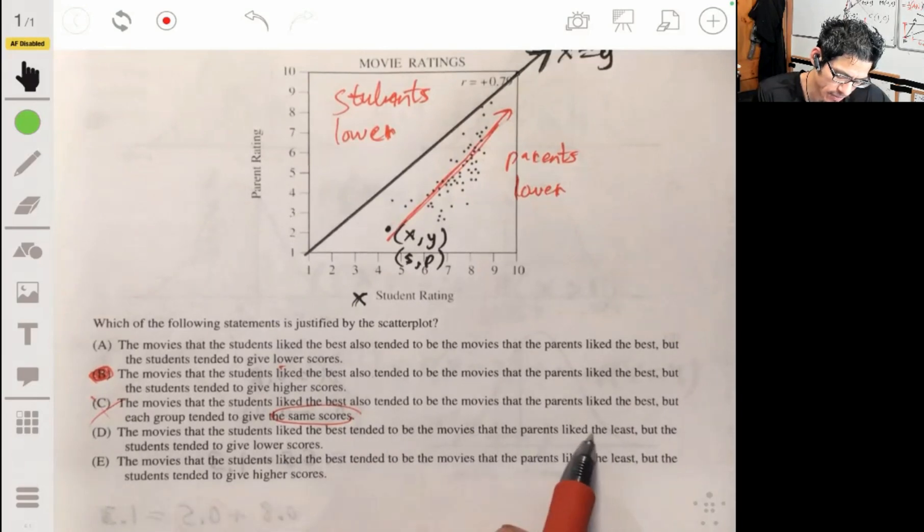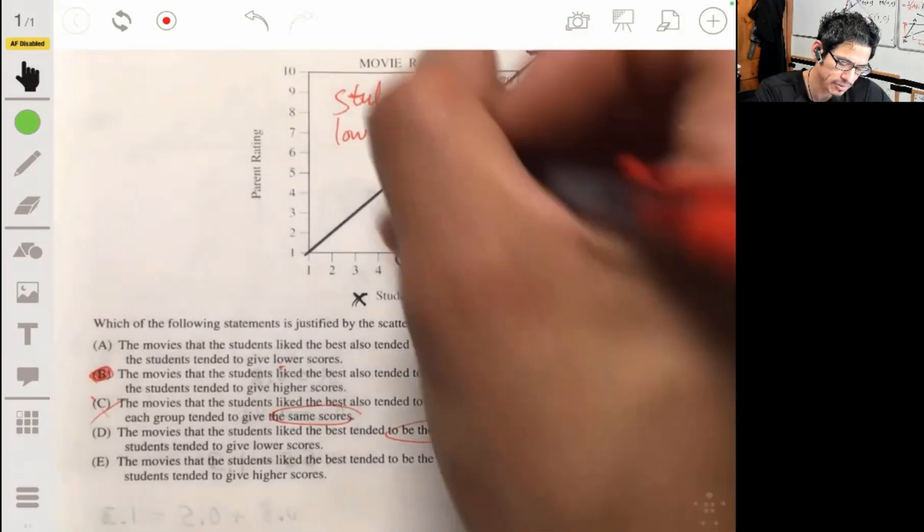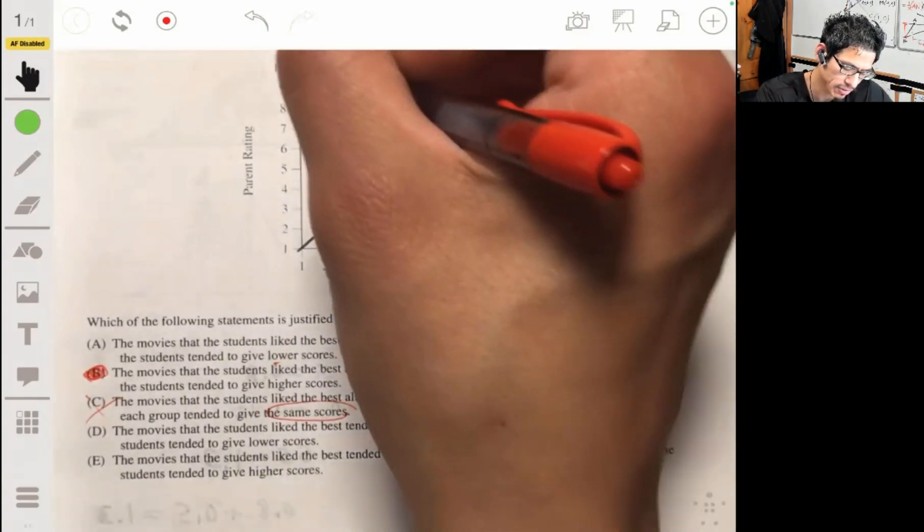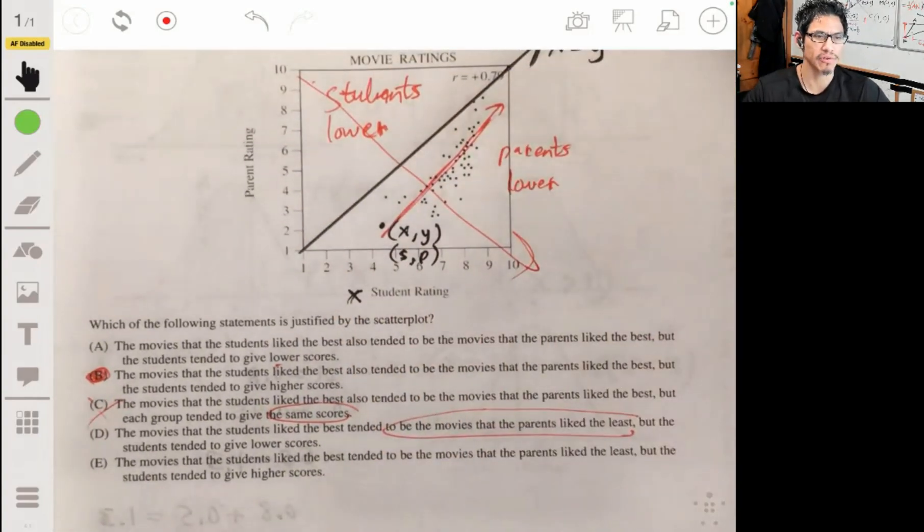Like the best, parents like the least. No, if it was D or E, the line would be trending this way. It'll be a negative correlation.